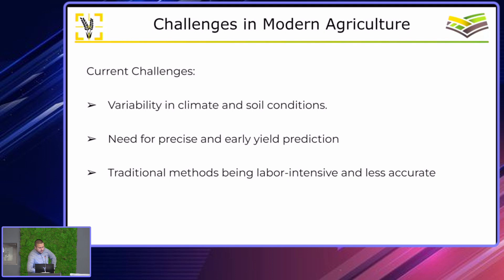That kind of climate variability can be a problem. There is also a need for precise and early yield prediction — if you can only predict yield two months before harvest, maybe it's not good enough, because the plant may have already reached its maximum potential and you can't improve it regardless of what you do. Traditional methods are also labor-intensive and more invasive compared to our approach.